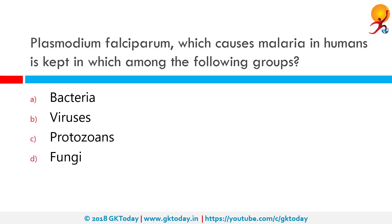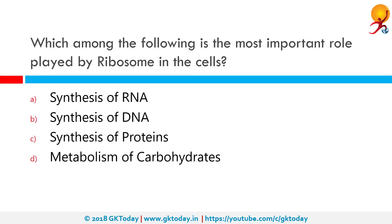Plasmodium falciparum, which causes malaria in humans, is kept in which among the following groups? Plasmodium is a tiny protozoa and is responsible for malarial disease. It has different species like P. vivax and P. falciparum, which are responsible for different types of malaria. The correct answer is C — Protozoans.